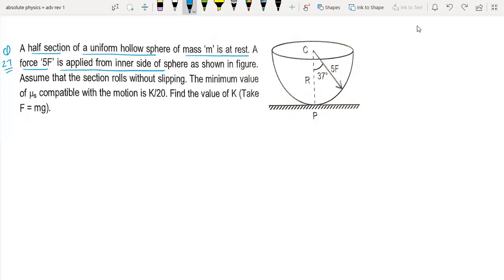Now, assume the section rolls without slipping. What is the minimum value of μ compatible with the motion? F value is mg. So first, let's see and break it.